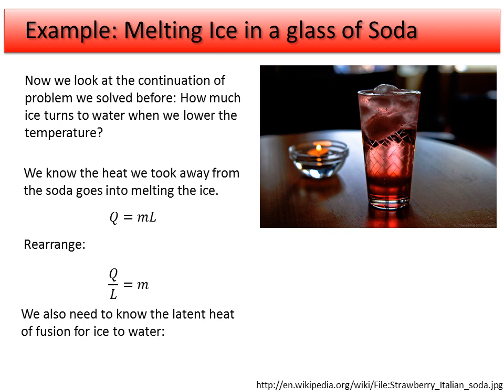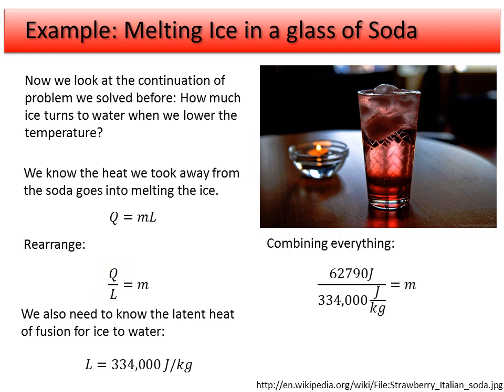So we need a value for the latent heat of fusion of ice to water, and that happens to be 334,000 joules per kilogram — it's a big number. So we plug in the numbers. We have the latent heat here, and we're going to use the 62,790 joules from the previous problem.